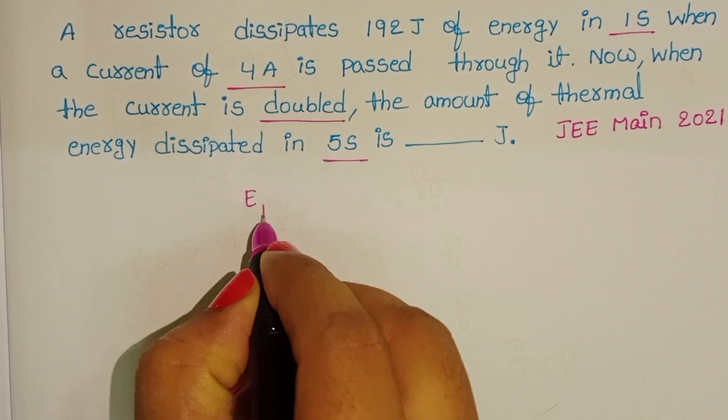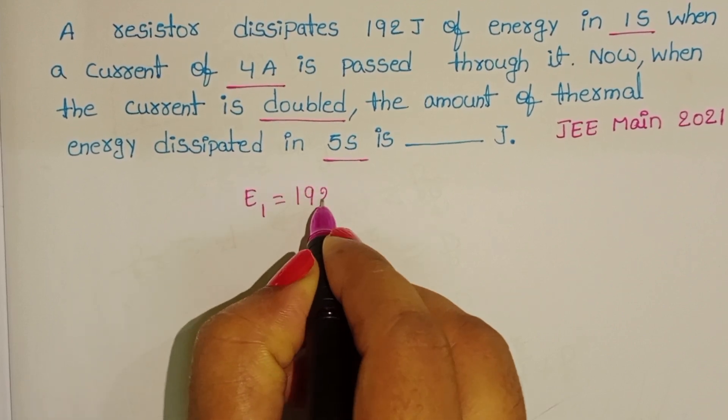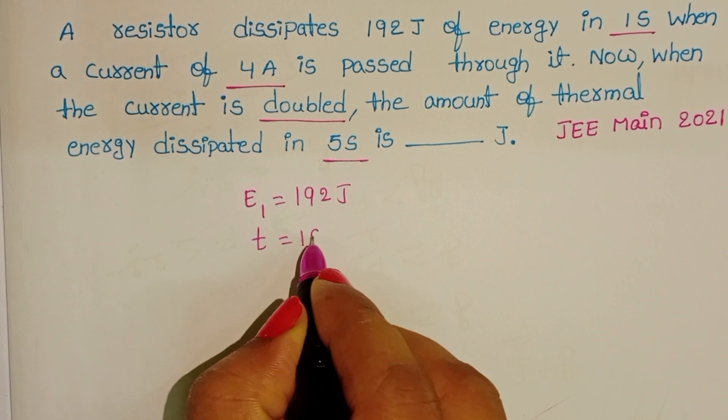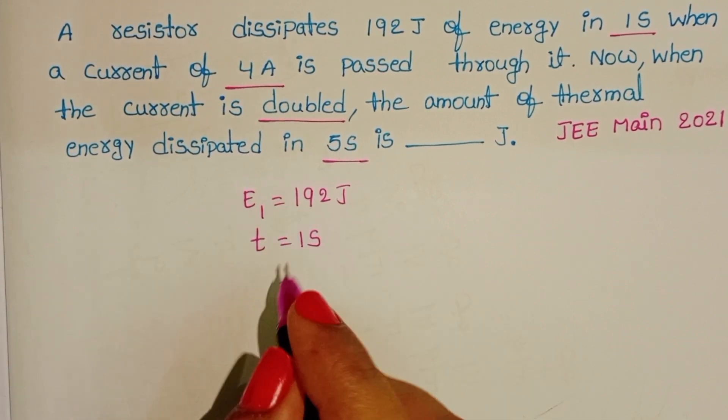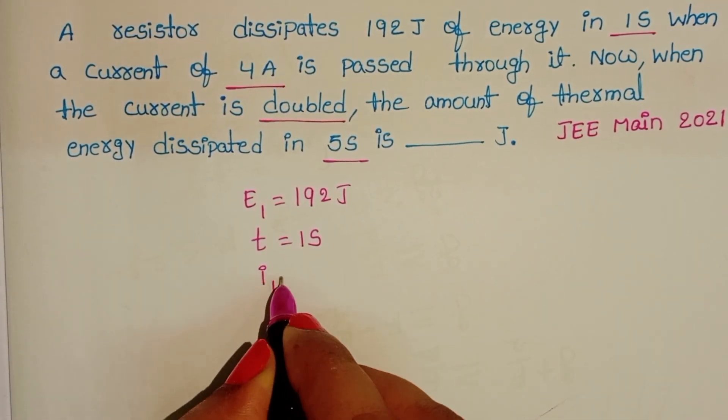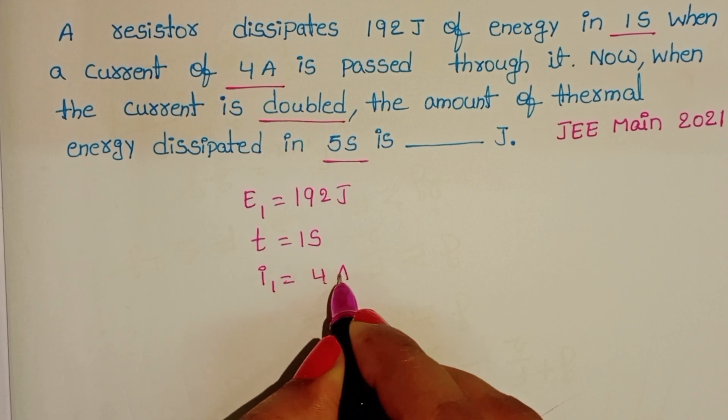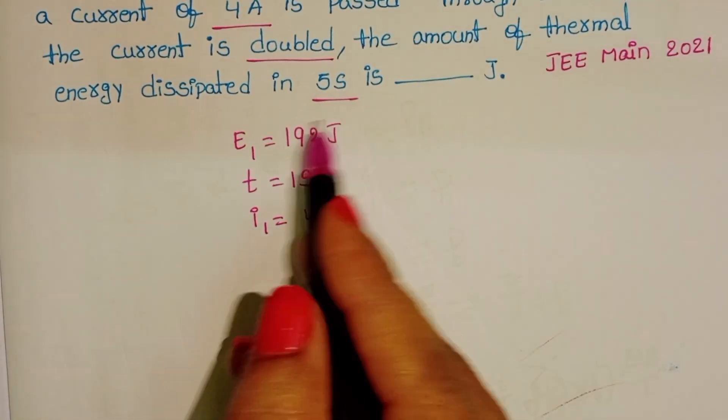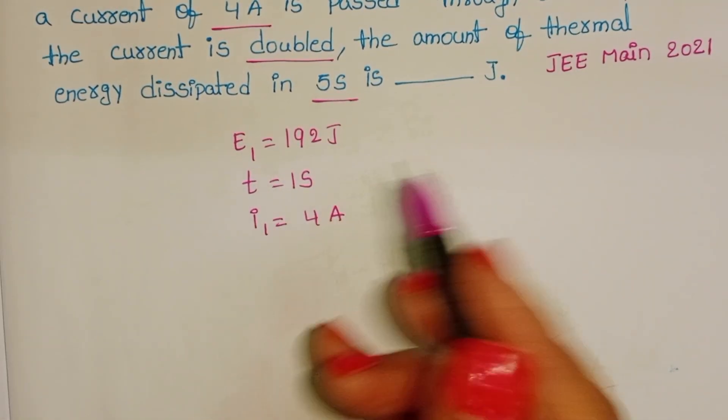In the given question, initial energy is 192 joules, time is 1 second, and current passed through the resistor is 4 amperes. By using this information, find out the resistance.